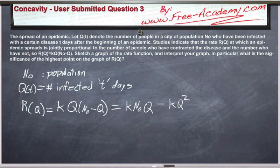We've been given a formula here. You can read all this if you want, pause the video. Basically what it comes down to, if we have an epidemic going around and we have a city with a population equal to n0, and Q(t) is the number of people infected t days after the start of the epidemic.